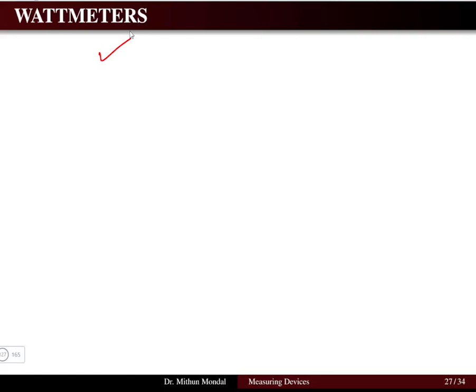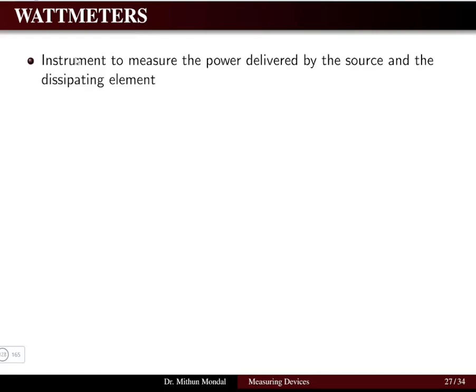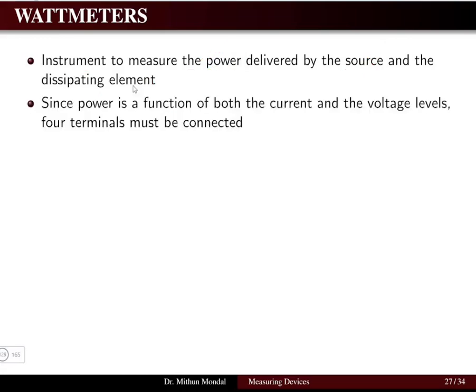Welcome to the next lecture in electric circuit analysis. We were discussing measuring devices — we discussed the ohmmeter, ammeters, and voltmeters. In this particular lecture we'll focus on wattmeters. A wattmeter is basically an instrument to measure the power which is delivered by the source and dissipated in an element like a resistor.